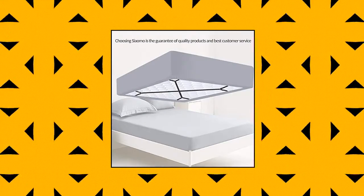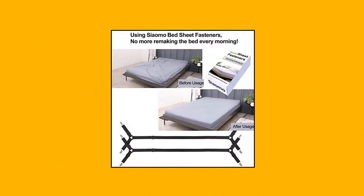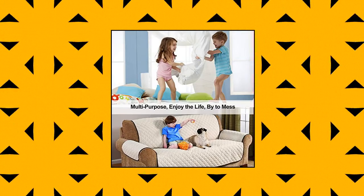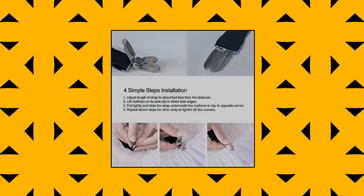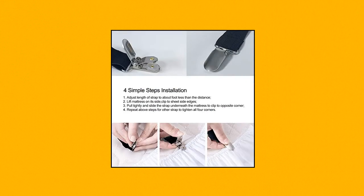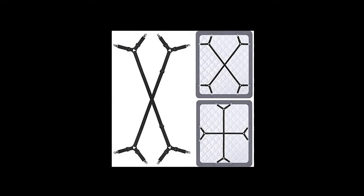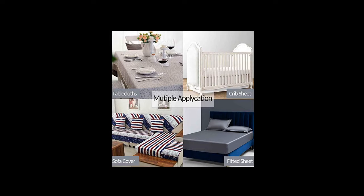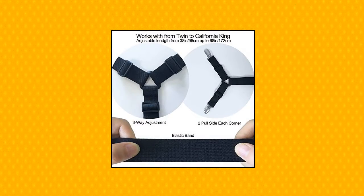Salmo bed sheet holder straps, adjustable crisscross sheet clips elastic band fitted bed sheet fastened suspenders grippers. Bed sheet straps suspenders, multifunctional adjustable length from 96 cm (38 inch) to 171 cm (67.3 inch), nickel plated clamps with fabric protector. Fit to various beds, perfect for fitted sheet and flat sheet. Adjustable length allows desired tension. The newest and hottest product being used for keeping sheets tight all night long. Great for bed sheets and mattress cover straps.